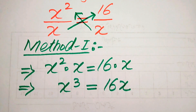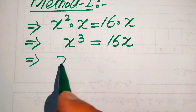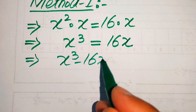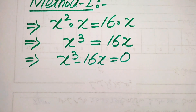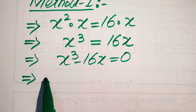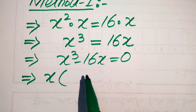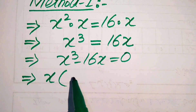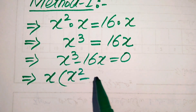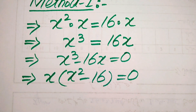Now we move 16x to the left hand side, and it will be written as x cubed minus 16x equals 0. Both of these terms involve x, so we take common x from here. When you take common x it will be written as x times (x squared minus 16) equals 0.